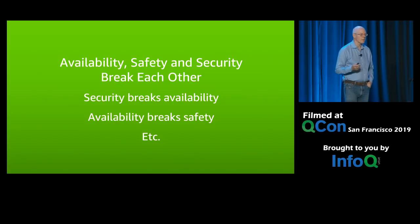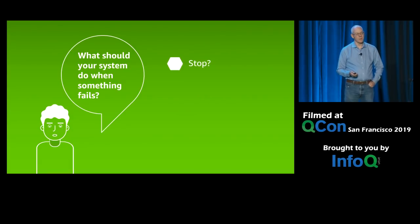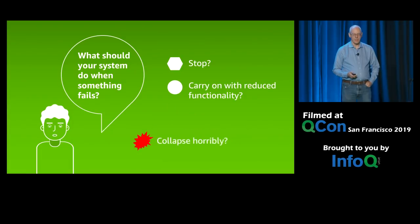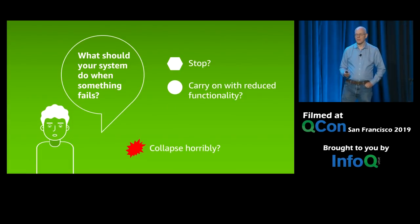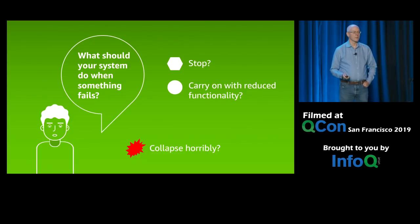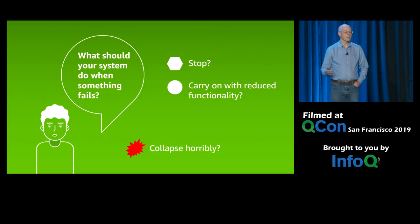So what should your system do when something fails? A few choices. One thing you could do is stop, because you're not sure what you should do — if it might not be safe to continue. Or maybe try to carry on with reduced functionality. But what actually usually happens? It collapses horribly — because the least well-tested code in your system is the error handling code, and the least well-tested processes are the disaster recovery processes. These are the ones no one wants to touch. We've got lots of examples of a small failure triggering a bigger failure and blowing up to take out an entire system, an entire company.